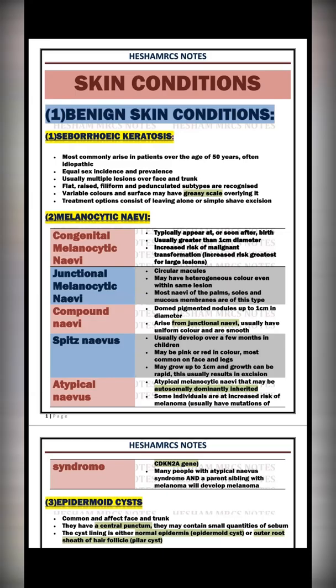Here's the first slide for our lecture today regarding the discussion of some skin conditions. We will start with benign skin conditions. The first one is seborrheic keratosis, which is a common benign superficial condition occurring in male patients more than 50 years old. You will see multiple lesions especially over the face and trunk, appearing as flat or raised, filiform or pedunculated areas, variable in color. The most important keyword for the exam is 'superficial greasy scale' overlying it.